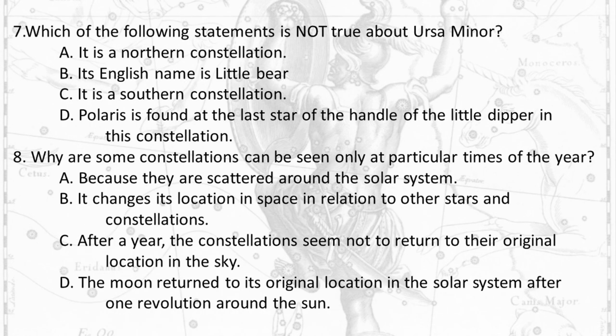Question 7: Which of the following statements is not true about Ursa Minor? A. It is a Northern constellation. B. Its English name is Little Bear. C. It is a Southern constellation. D. Polaris is found at the last star of the handle of the Little Dipper in this constellation. Question 8: Why are some constellations seen only at particular times of the year? A. Because they are scattered around the solar system. B. It changes its location in space in relation to other stars and constellations. C. After a year, the constellations seem not to return to their original location in the sky. D. The moon returned to its original location in the solar system after one revolution around the sun.